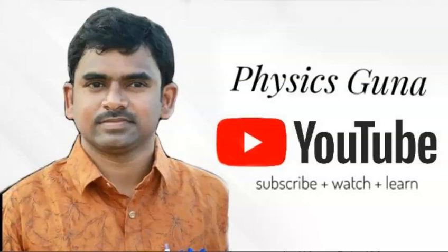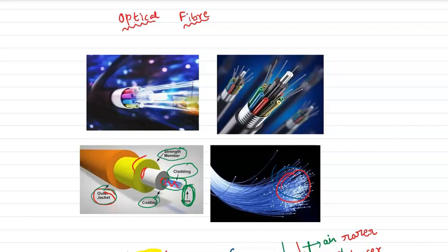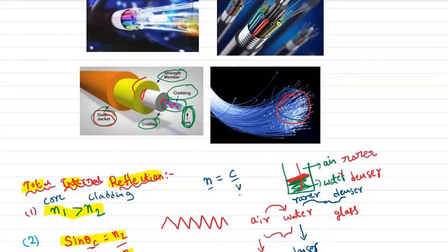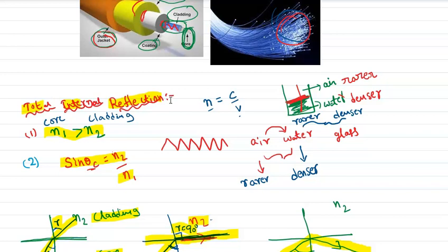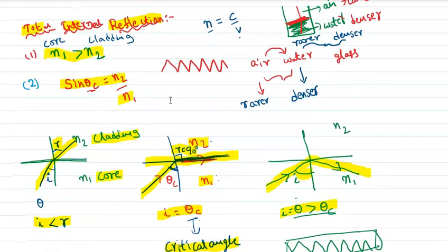Welcome to today's topic: optical fiber. Optical fiber is a thin transparent dielectric material made with glass or plastic. It works based on the principle of total internal reflection. The conditions for total internal reflection are: the refractive index of the core should be greater than the refractive index of the cladding.